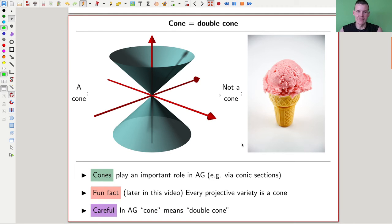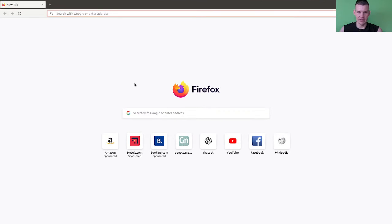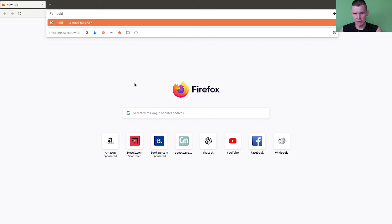Let's get started easily, right? So a cone in algebraic geometry is usually what people call a double cone. So if you Google double cone, so let's actually try that. Double cone, can I spell double? We'll see. Double cone.